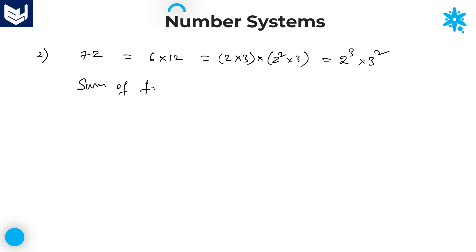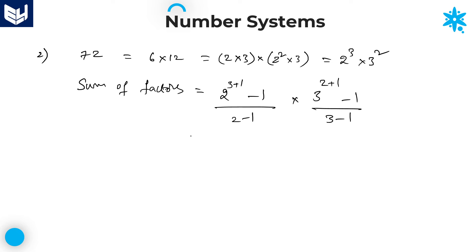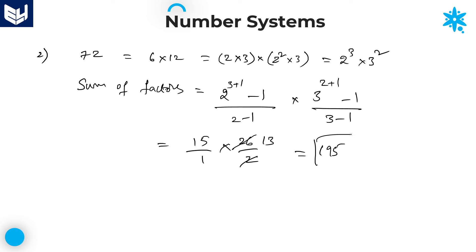Sum of factors for 72: we have two different prime factors, so sum of factors equals (2 power 3+1 minus 1) divided by (2 minus 1) into (3 power 2+1 minus 1) divided by (3 minus 1). That is (2 power 4 minus 1) over 1 into (3 power 3 minus 1) over 2, which is 15 over 1 into 26 over 2. Cancelling gives 15 into 13 equals 195. Sum of factors for the number 72 is equal to 195.